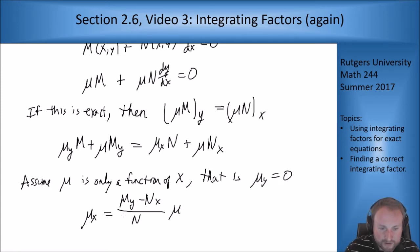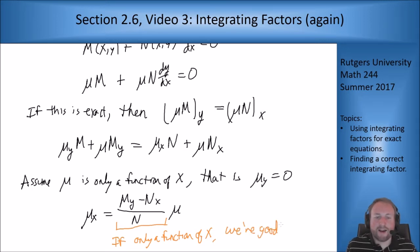If I move the n_x term over to the left hand side, then divide by n, I get that μ_x should equal (m_y - n_x)/n times μ. Now again, if this here, if only a function of x, we're good. If that guy there only depends on x, then I can solve for this function μ, it's a separable equation, I can solve for it, and we're good. If that guy depends on y, then we're out of luck. Then there is no way to find an integrating factor that only depends on x.